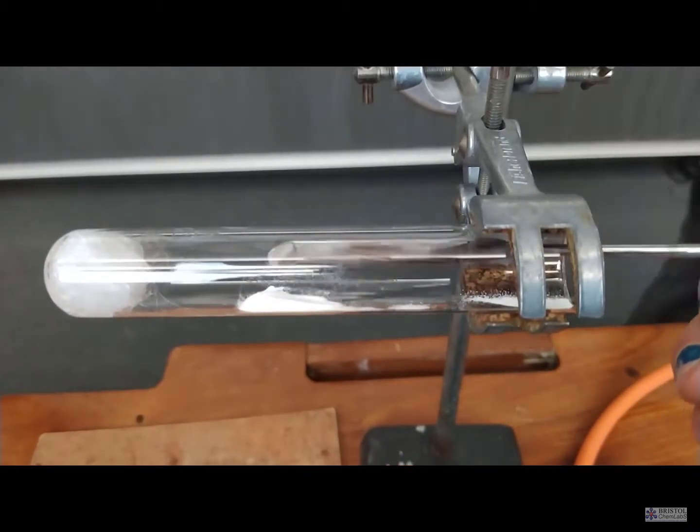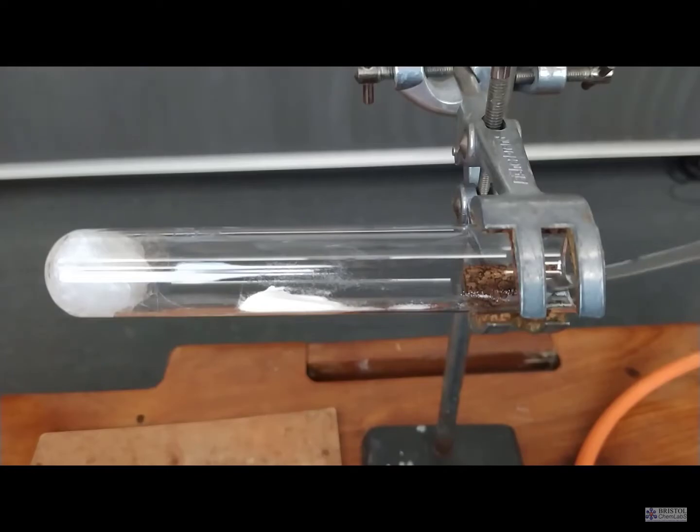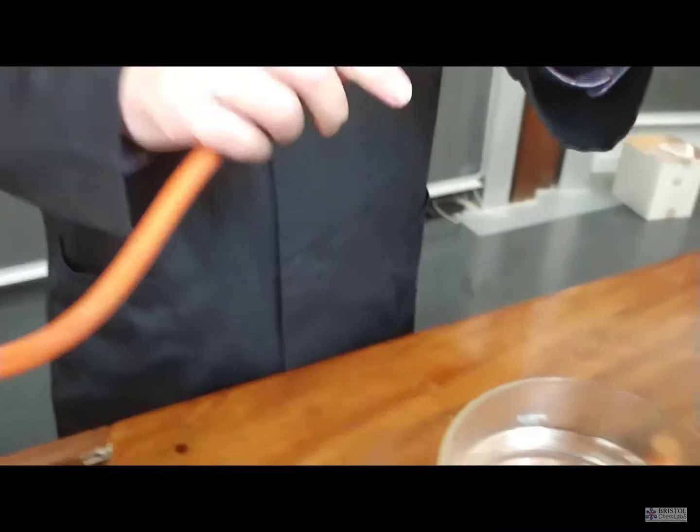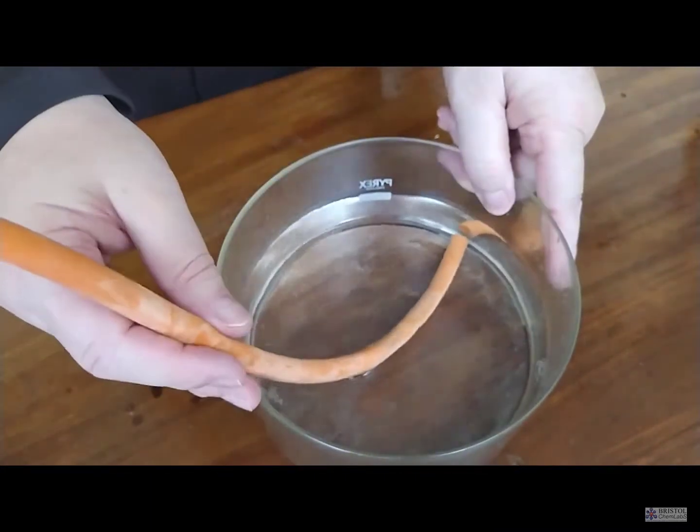And if the students are doing it, they'll need to make sure that they're using a clamp that has full cork coverings, or at least rubber coverings, on all three prongs.